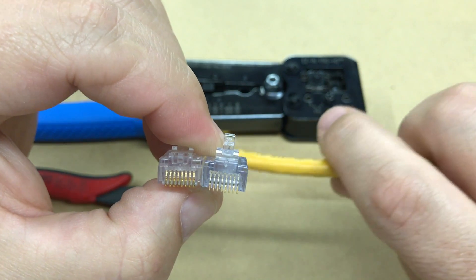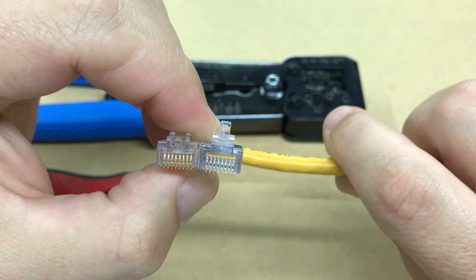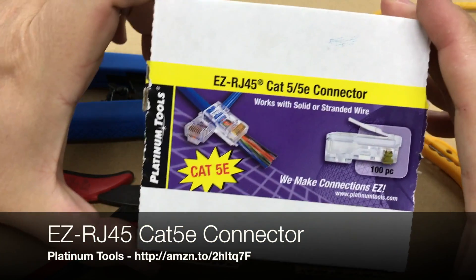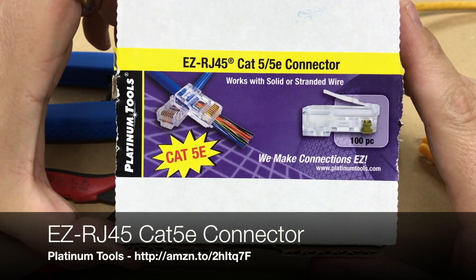I like these - they're called Easy RJ. It's a special type of connector and it does require a special type of crimper.